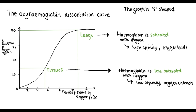Going back to why the graph is S-shaped: at really low partial pressures of oxygen, as we increase the oxygen, the percentage saturation of haemoglobin doesn't increase very much. But once we get a little bit higher, the percentage saturation increases really quickly for a small increase in oxygen. This is due to the cooperative nature of oxygen binding. After the first oxygen molecule binds, the shape of haemoglobin changes in a way that makes it easier for the second and third oxygen molecules to bind, meaning haemoglobin has a higher affinity for oxygen — so the gradient gets steeper. But after haemoglobin becomes more saturated, it gets harder for further molecules to bind, which is why it plateaus.